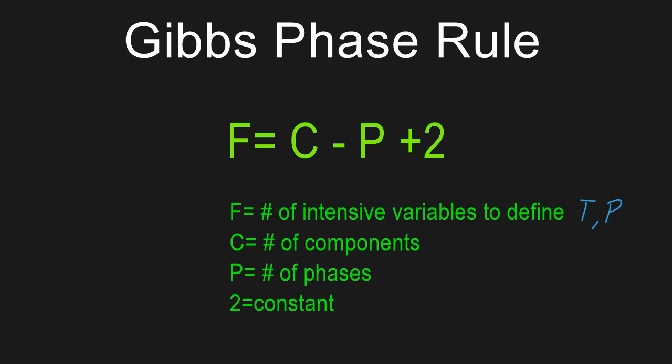C is the number of components in that system. So if I had just water in a jar, that would be one component. If I had water and salt, that would be two components. If I had water, salt, and oil, that would be three components. P is the number of phases — just ice would be one phase, ice and water would be two phases, and ice, water, and steam together would be three phases. The 2 is just a constant in the equation.